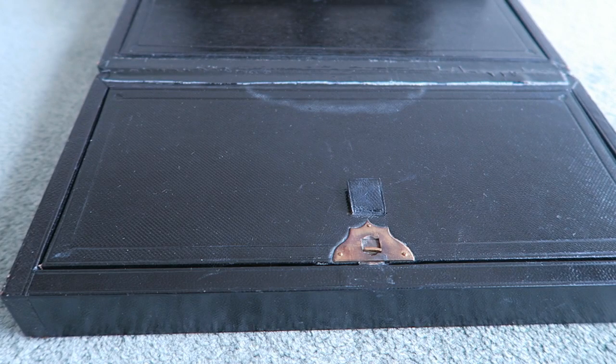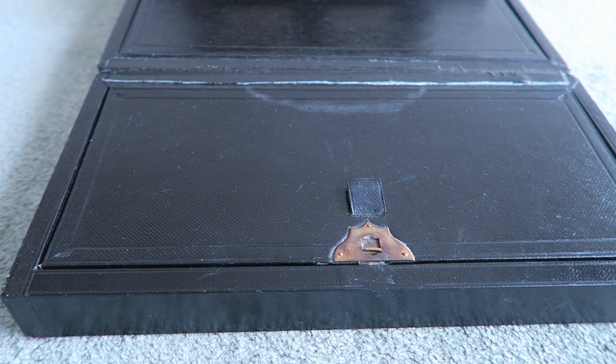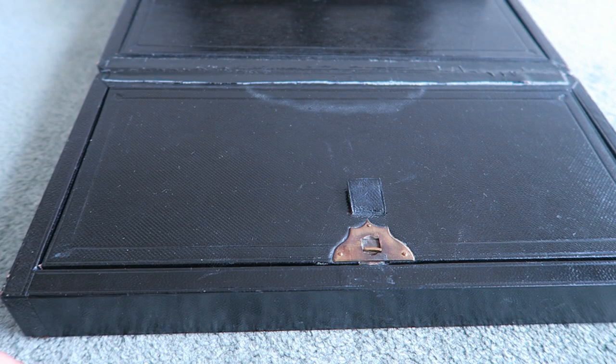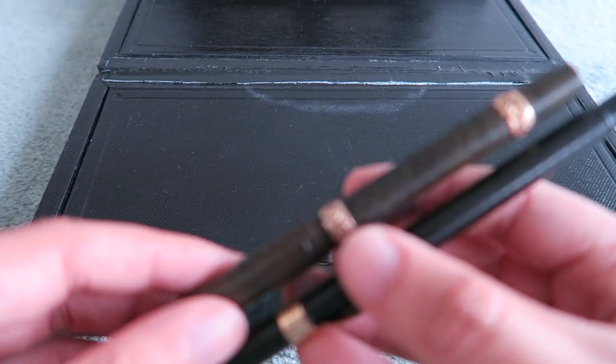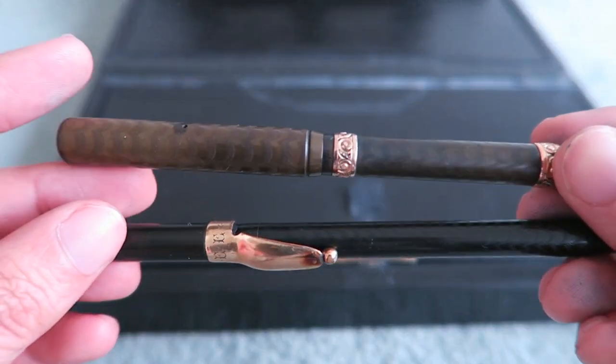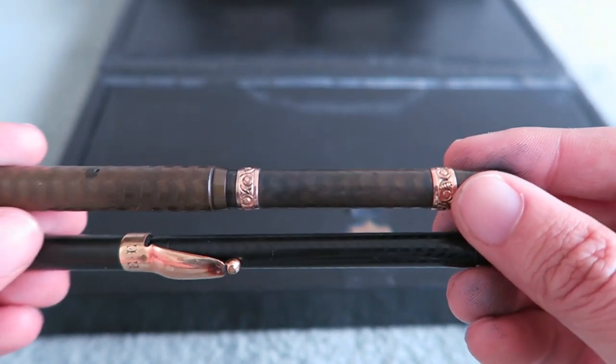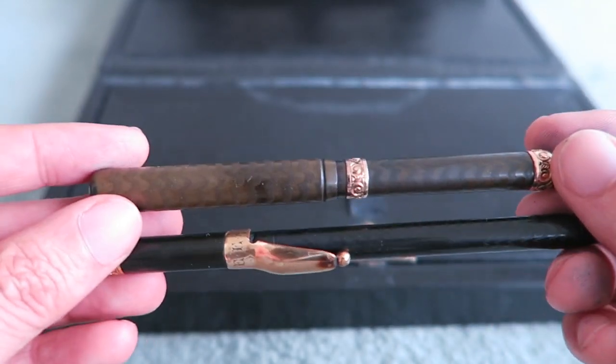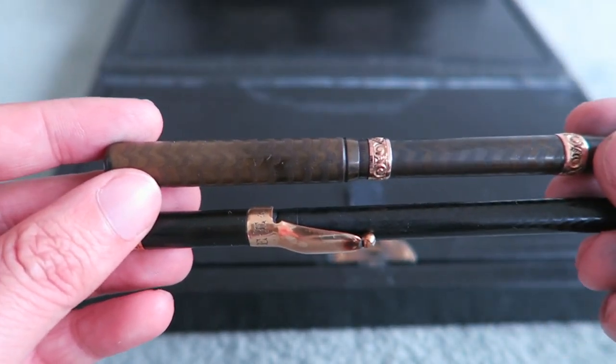And for, from about 1890 to about 1905, eyedropper pens like this were all the rage. And they're all black. They were made of a substance called ebonite, also called hard rubber. And they said, you know, it's like Henry Ford, you can have any pen you want so long as it's black.